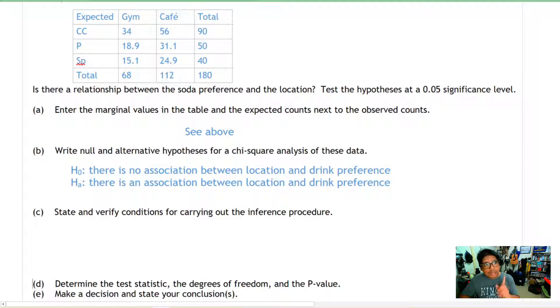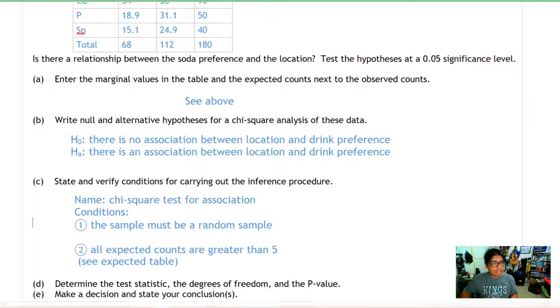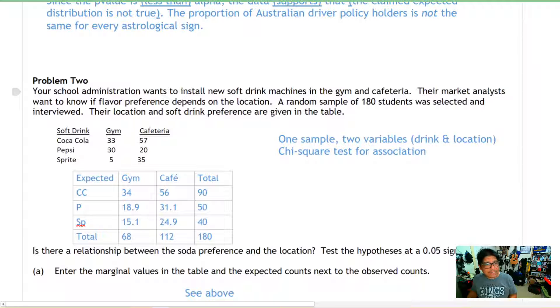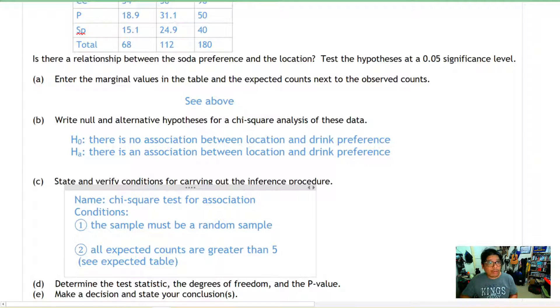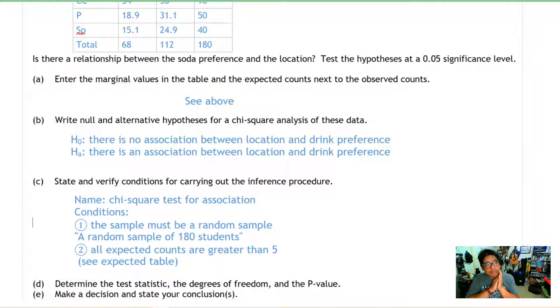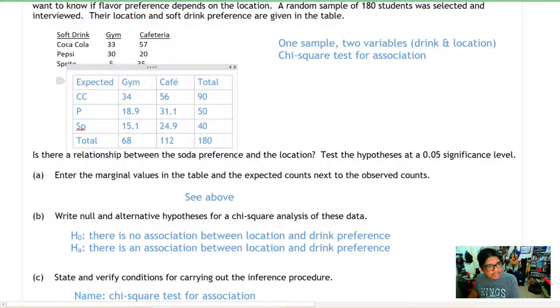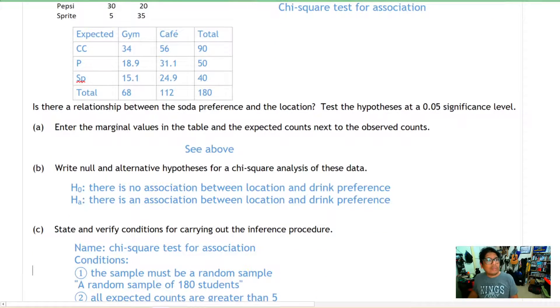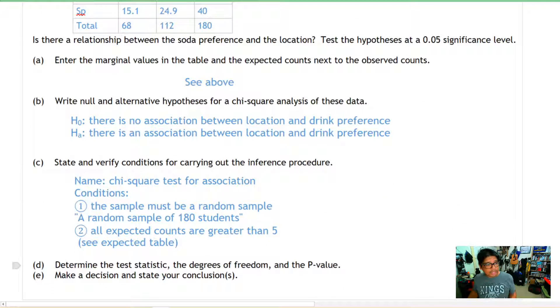Next, state and verify the conditions. There are only two conditions: the sample must be a random sample, and all expected counts have to be greater than five. The name of this test is the chi-square test for association. Is this a random sample? I see in the reading here we have a random sample of 180 students. For the next one, all expected counts are greater than five, and we're going to refer to the expected table.